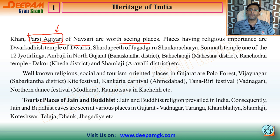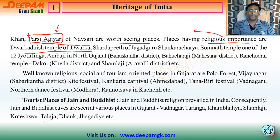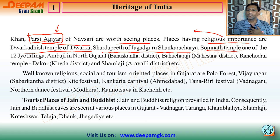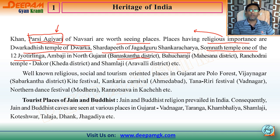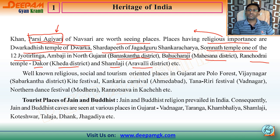Places having religious importance include: Dwarkadhish Temple of Dwarka, Jagadguru Shankaracharya Sharda Peeth also in Dwarka, Somnath Temple (one of the twelve Jyotirlingas — the first Jyotirlinga), Ambaji in Banaskantha district in North Gujarat, Bahuchara Raji in Mehsana district, Ranchodrai Temple in Dakor in Kheda district, and Sabarmati in Sabarkantha district. These are our religiously important heritage sites.